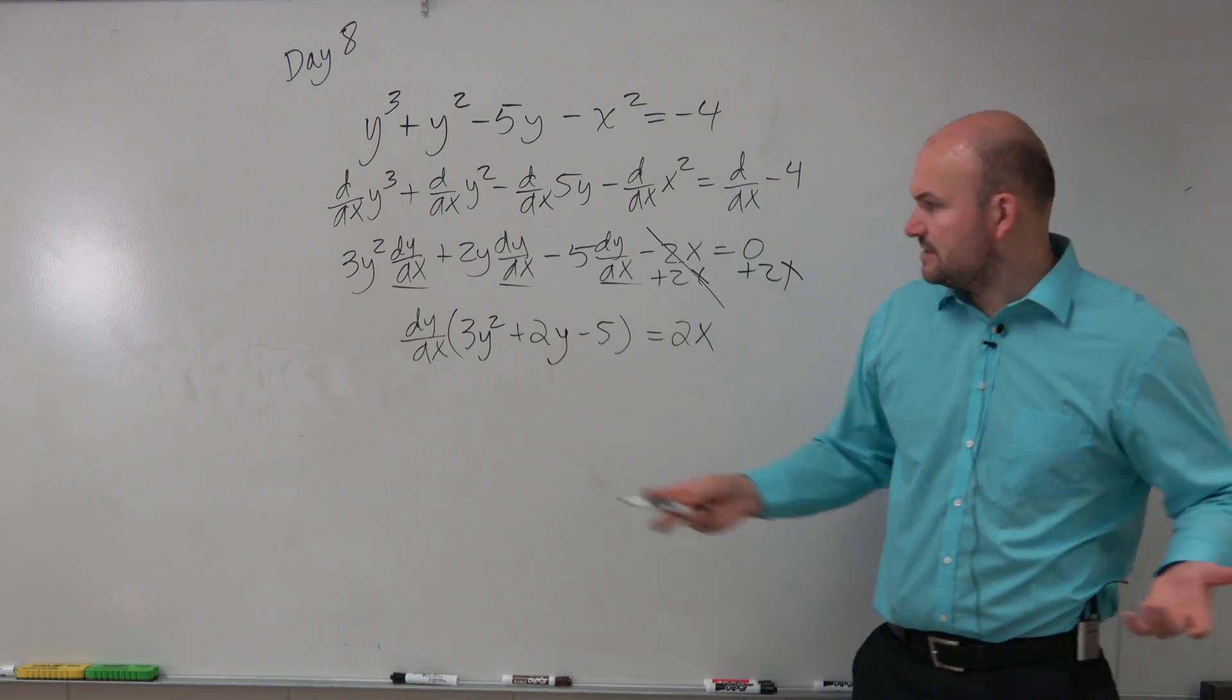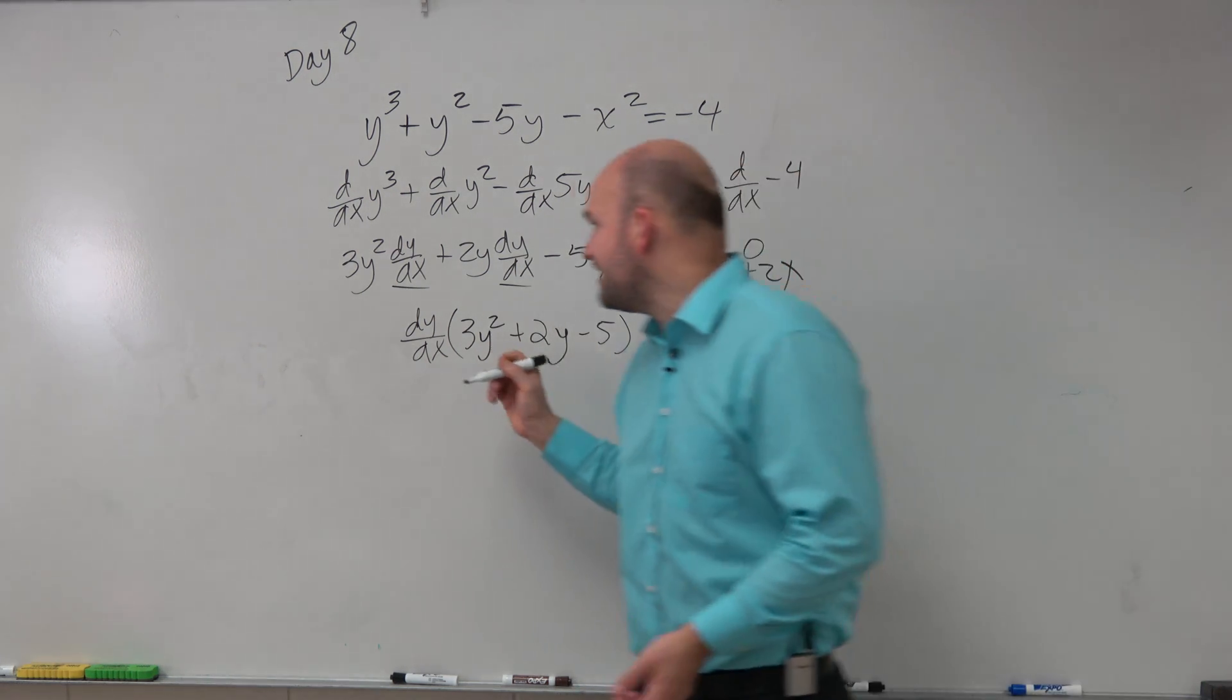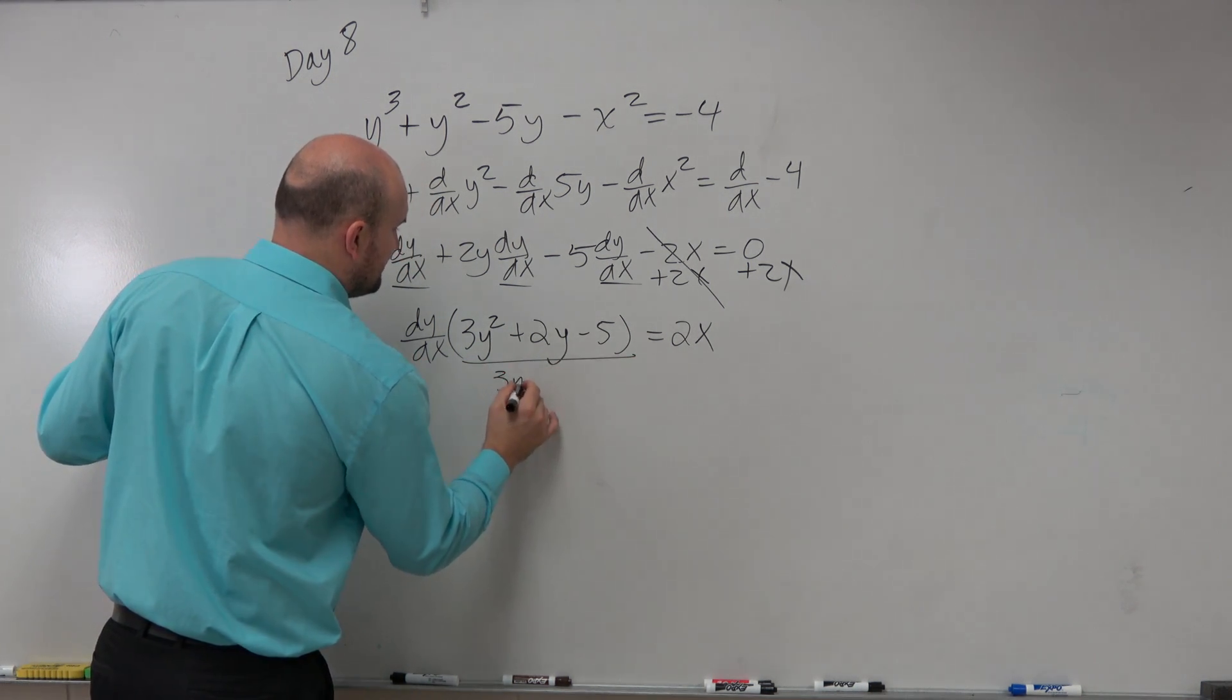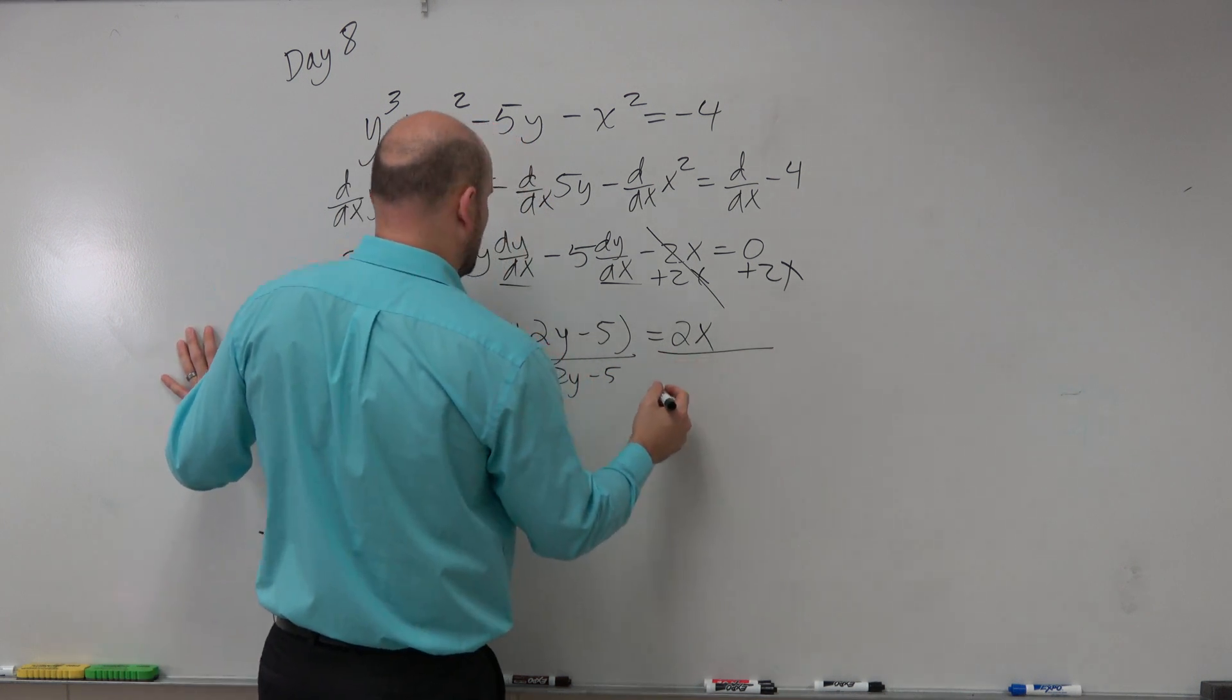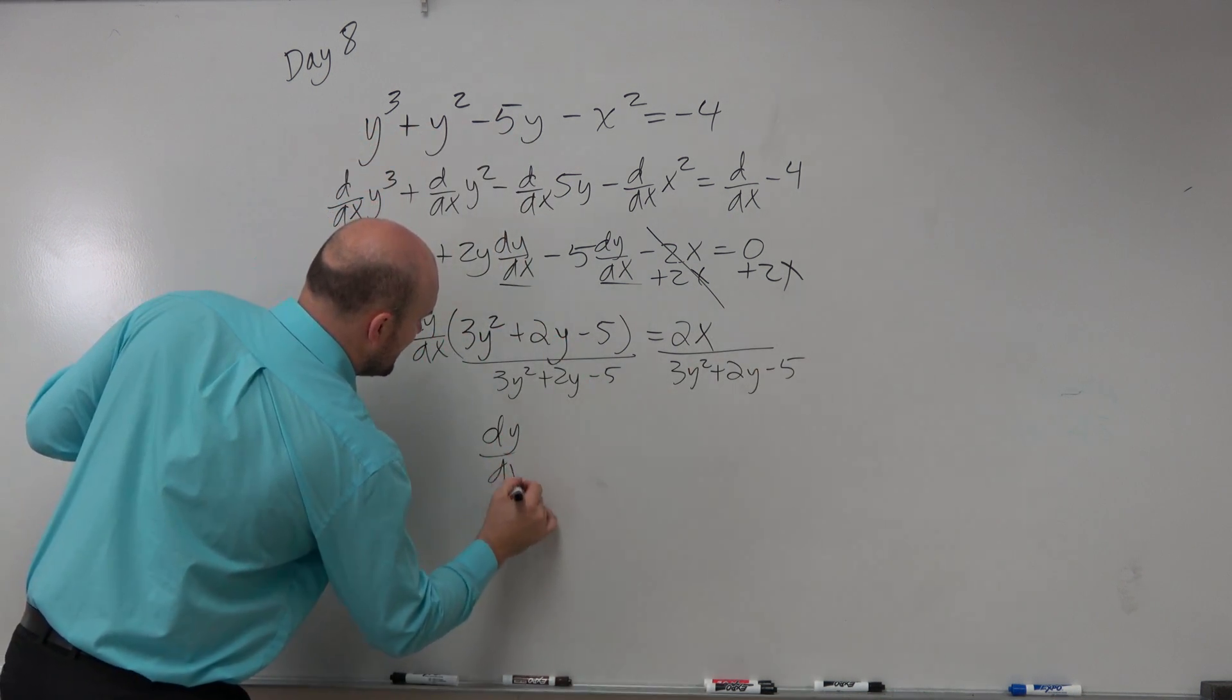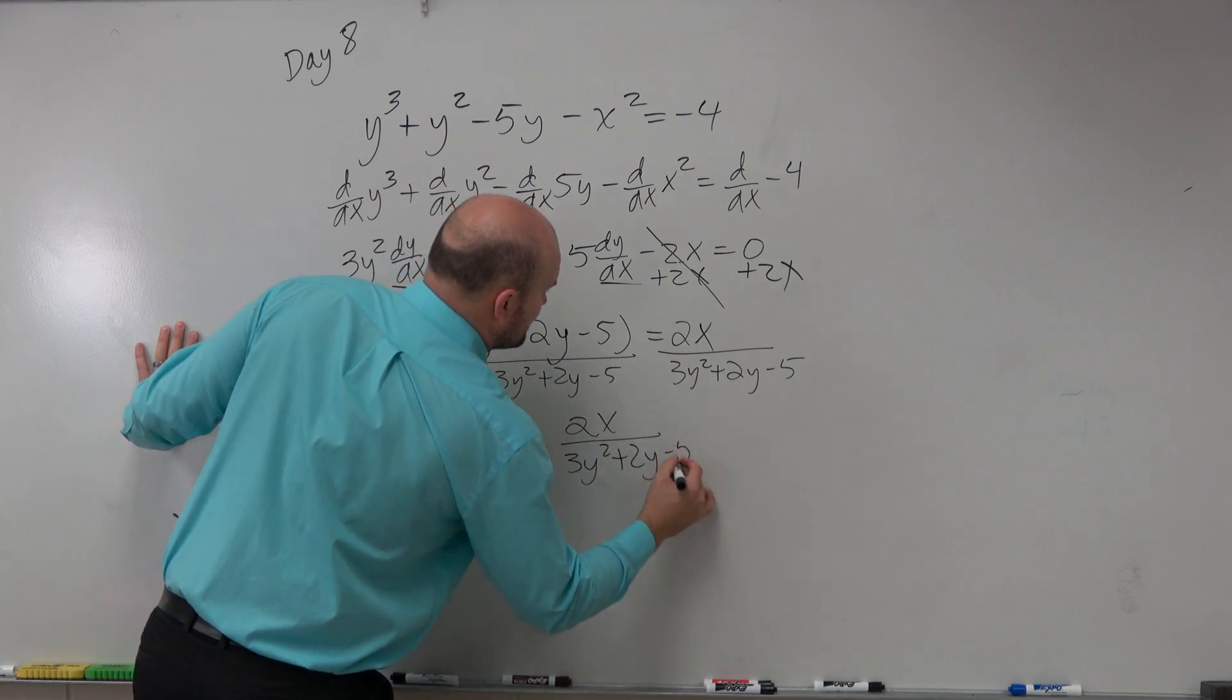And you can always check your answer back. Just take dy dx and multiply it back times every single term. You still have the same expression. But now I have isolated my dy dx. So to solve, I'm just going to divide by 3y squared plus 2y minus 5. So therefore, my final answer is dy dx equals 2x over 3y squared plus 2y minus 5.